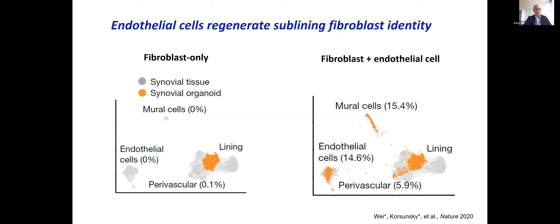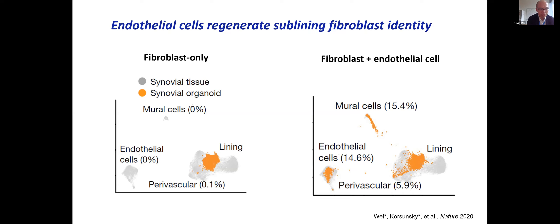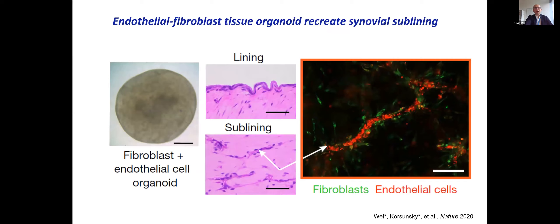A question from Dr. Lyles: are the perivascular fibroblasts functioning pericytes — are they PDGFR-beta positive? The answer is yes. Sublining fibroblasts are PDGFR-beta high, and on trajectory analysis these cells are much more similar to pericytes than lining fibroblasts. There is literature in developmental biology suggesting the origin of pericytes is from mesenchymal fibroblasts. I was inspired by that literature to form the hypothesis that there's a connection between pericytes and these inflammatory fibroblasts.